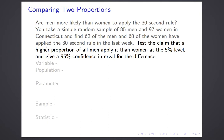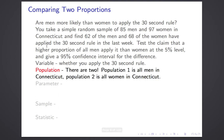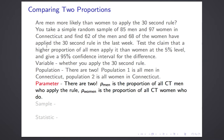We're also going to give a 95% confidence interval for the difference in proportions. The variable — the thing you ask each individual — is whether they've applied the 30-second rule in the last week, a binary categorical variable. For the first time we have two populations: all men in Connecticut and all women in Connecticut. Likewise, we have two parameters: the proportion of all Connecticut men who apply the rule (p_men) and the proportion of all Connecticut women who apply the rule (p_women).